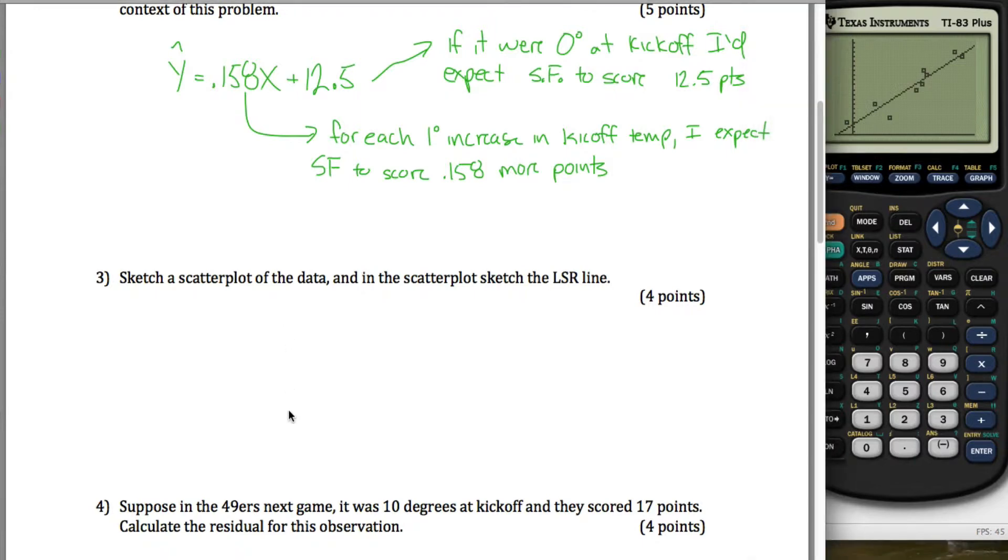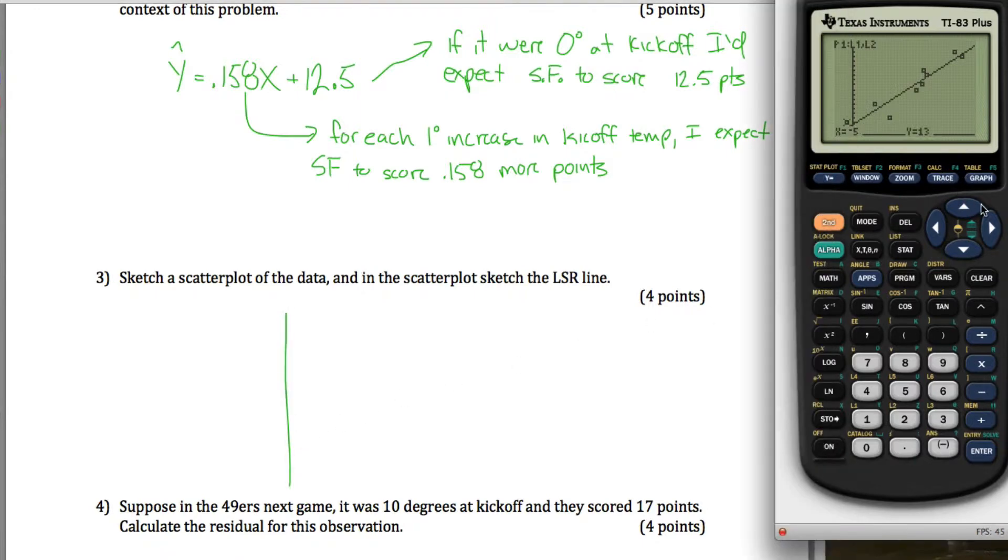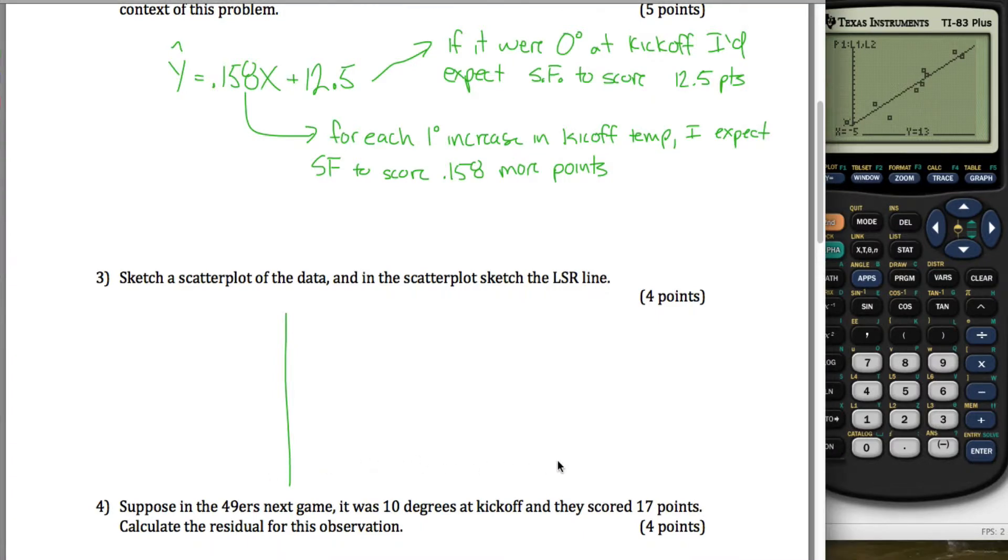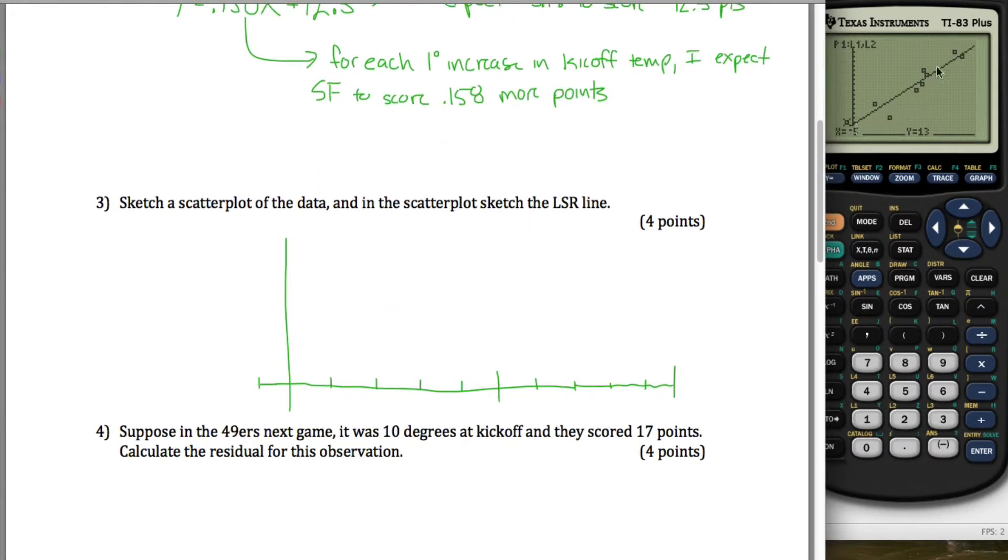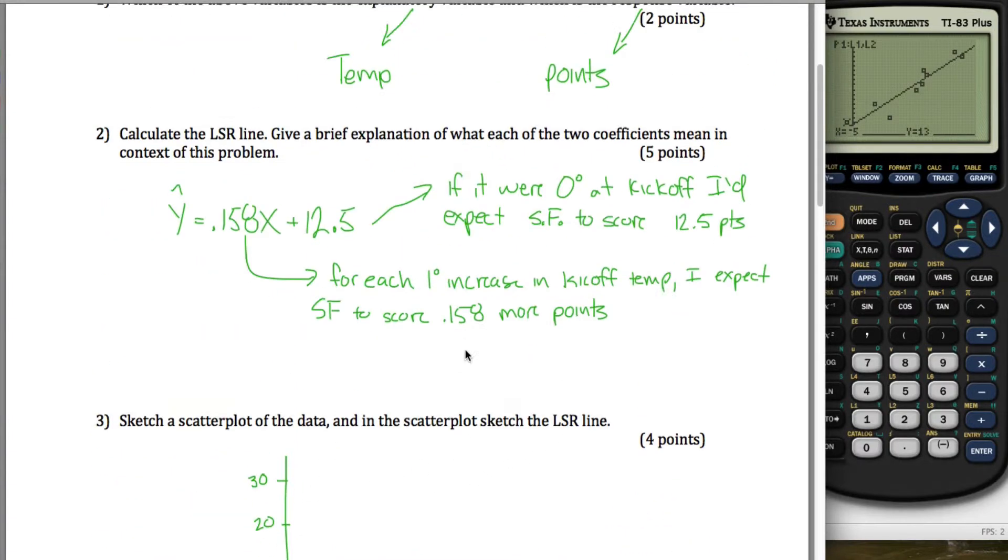So what it's giving me is a scatter plot. I'll try my best to copy what that thing has. Here's negative 10 degrees, 10 degrees, 20, 30, 40, 50, 60, 70, 80, 90, 100. We don't have any data points over 100, it goes up to 95 degrees. And points go from 13 to 28. So you could start at 10 here, or since that's close enough to zero, you could just make it zero. 10, 20, 30. I'll call that good. You can do other things for your scatter plot. I don't really care.